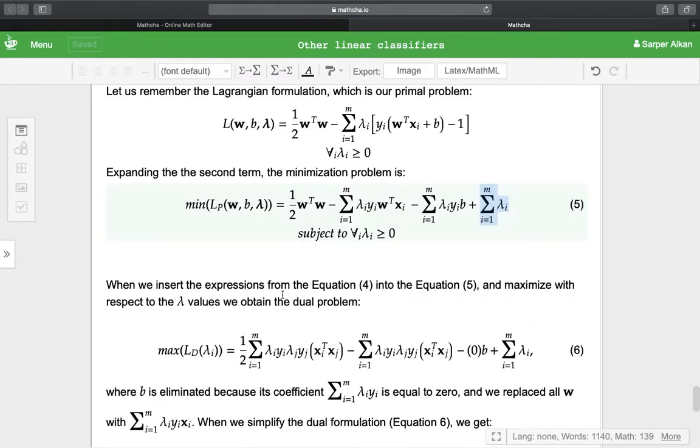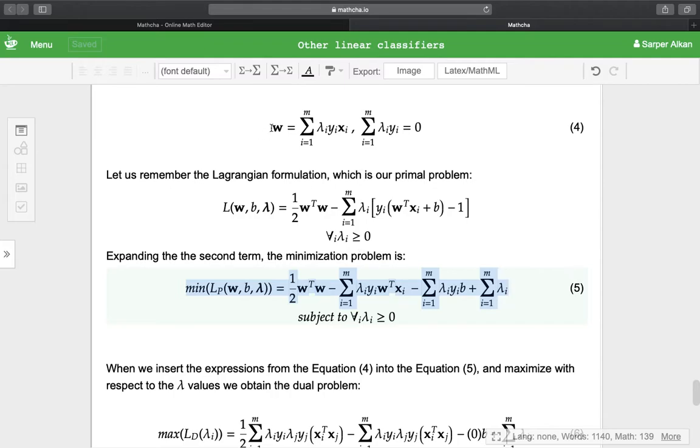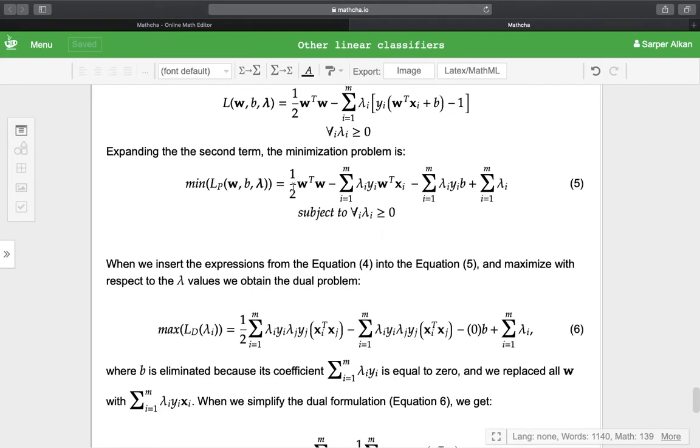When we insert the expressions from Equation 4 into this equation, replacing W with the expression, we get 1/2 Σ λᵢyᵢλⱼyⱼxᵢ^T xⱼ, and the second term becomes -Σ λᵢyᵢλⱼyⱼxᵢ^T xⱼ.